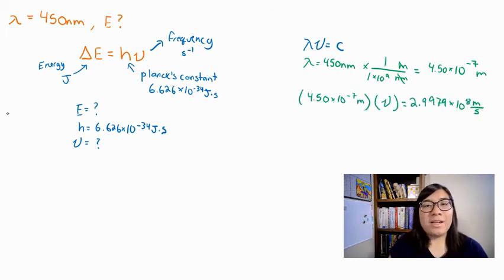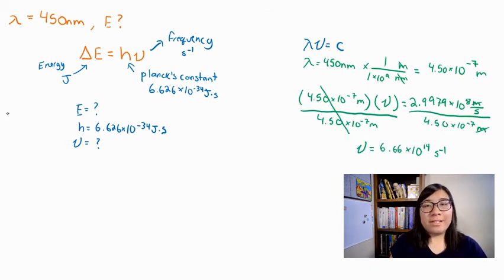Now that I have all my numbers in my equation, I can solve for nu by dividing both sides by 4.5 times 10 to the negative 7 meters. And let's see what we get. We find that our frequency is 6.66 times 10 to the 14th power per second.